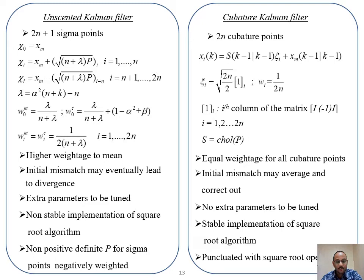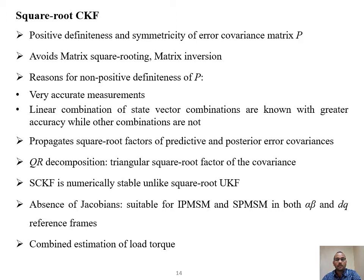The UKF square root algorithm is considered non-stable, but the CKF square root algorithm is very stable. If sigma points are negatively weighted, that can lead to non-positive definiteness of the error covariance matrix P, which does not occur with the CKF square root algorithm. The square root algorithm propagates the square root of P rather than P itself, thereby preserving positive definiteness and symmetricity. The root cause of non-positive definiteness seen in the literature is very accurate measurements combined with linear combinations of state vectors known with differing accuracy.